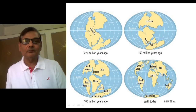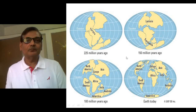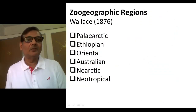In these different geographical areas, different kinds of native animals are found. For example, Prototherian mammals are found only in the Australian region. Certain kinds of flightless birds are confined to certain continents of the world. These six geographical regions were proposed by Wallace in 1876.